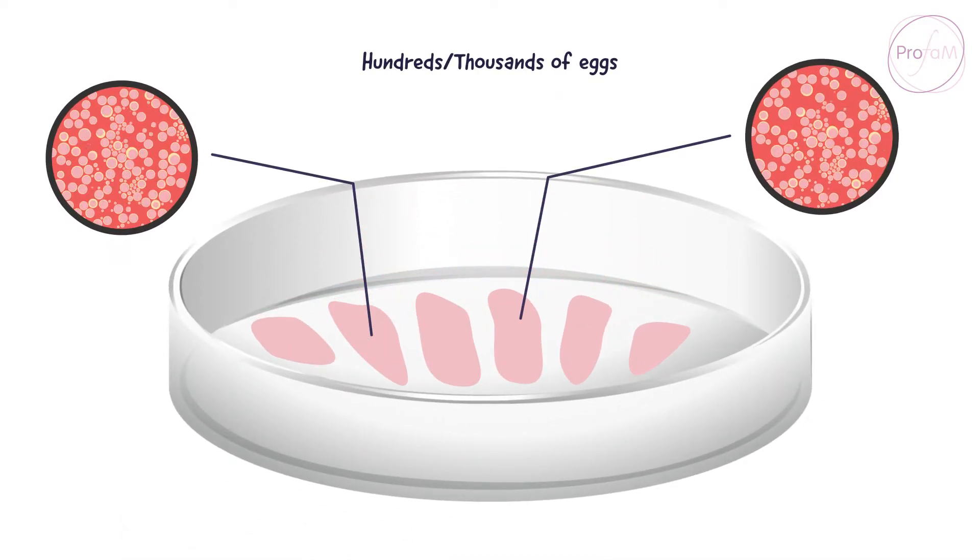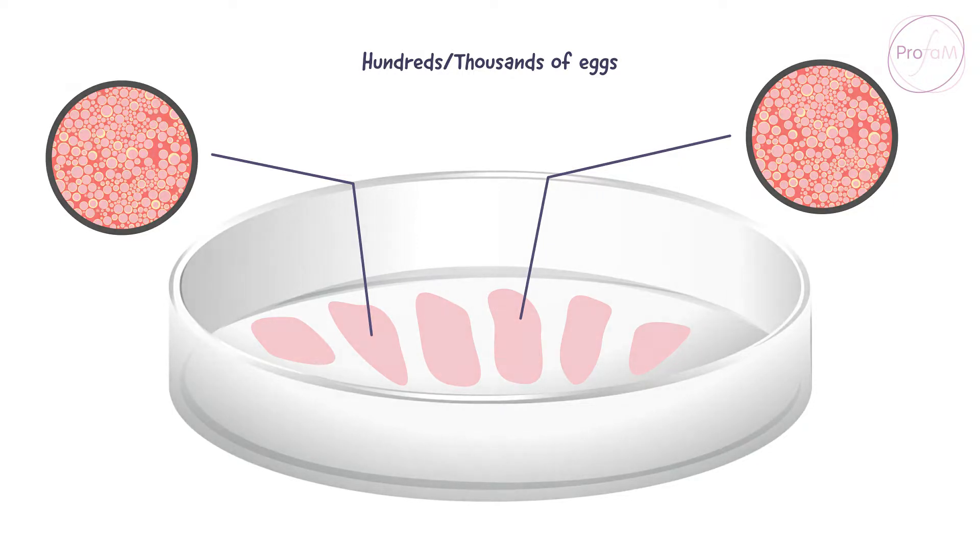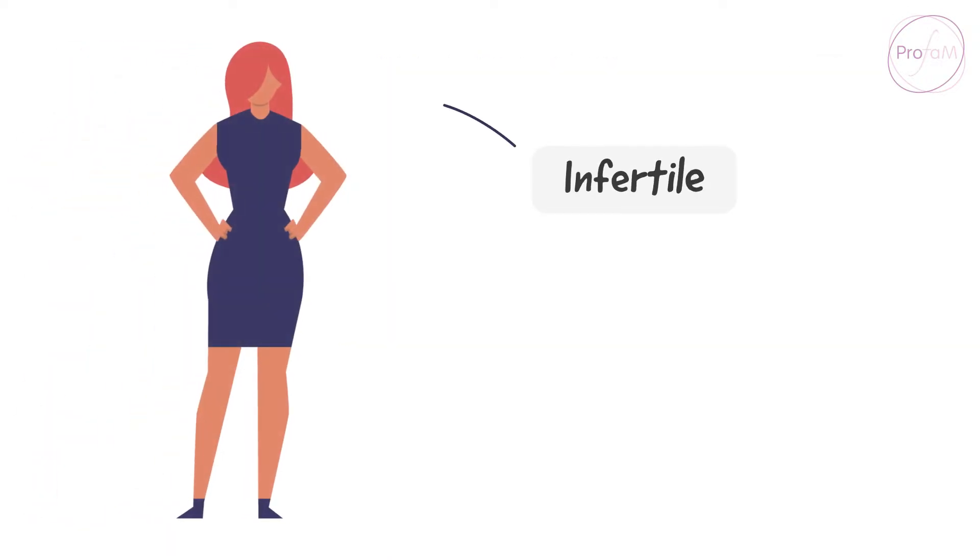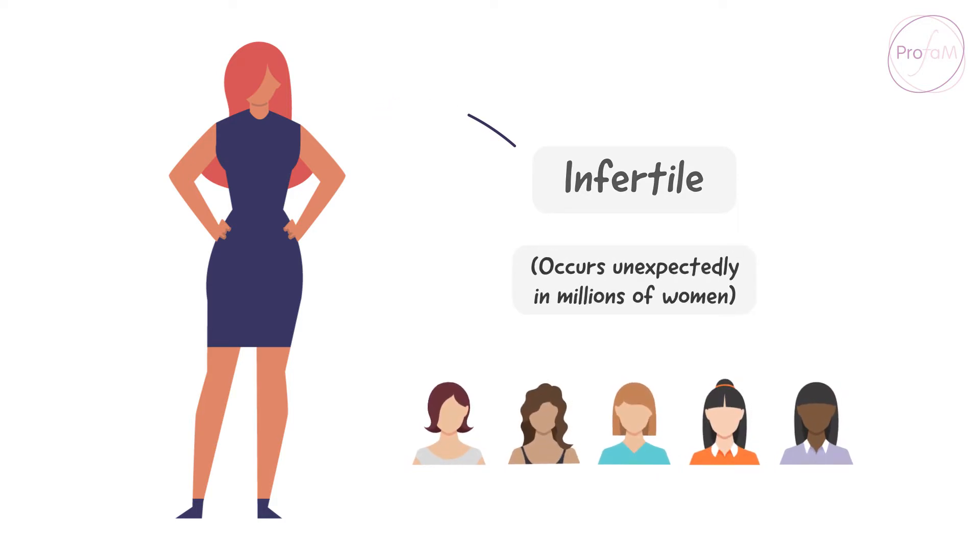so that they may be used for fertility purposes. Should the woman lose her fertility unexpectedly before she has had a chance to have a baby? Millions of women do lose their fertility prematurely.